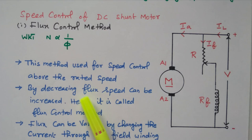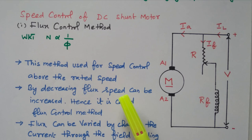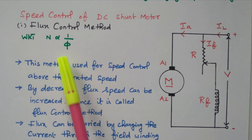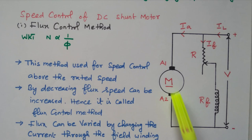This method is used for speed control above the rated speed. Up to rated speed, the voltage is varied — by varying the applied voltage, the speed can be varied, but that is applicable only up to rated speed. We can apply only rated voltage so that the motor will rotate at rated speed. Above rated speed we cannot increase the applied voltage; we can increase the voltage only up to the rated value. So if you want to increase the speed above rated speed, we use the flux control method.